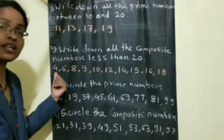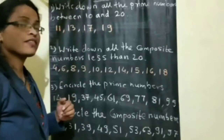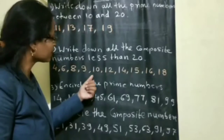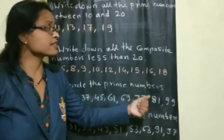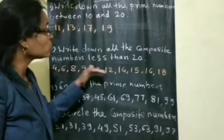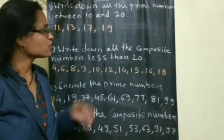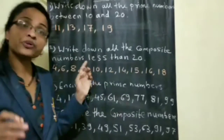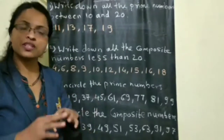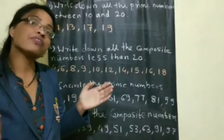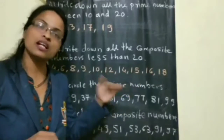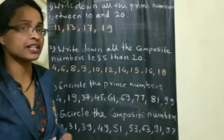If you see here, 4 has 3 factors, 6 has more than 2, 8 also has more than 2 factors, 9 also has more than 2 factors — and 10, 12, 14, 15, 16, 18 as well. A number which has more than 2 factors is a composite number. Sometimes they may ask for composite numbers less than a value, sometimes between given numbers — according to the question, you have to write your answer.